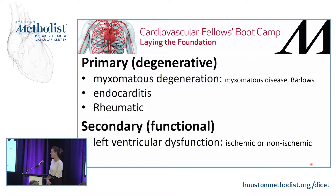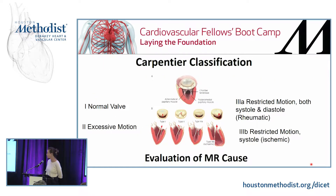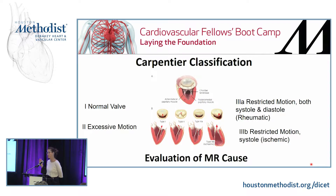Secondary MR is due to either ischemic or non-ischemic left ventricular dysfunction. The Carpentier classification has been what everyone uses to evaluate the cause of MR. Class I is a normal valve. Class II is excessive motion of one leaflet — that would be the prolapse or flail. Class IIIA is restricted motion of the leaflets in both systole and diastole, which would be due to rheumatic disease. Class IIIB is restricted motion during systole, which would be due to ischemic disease.